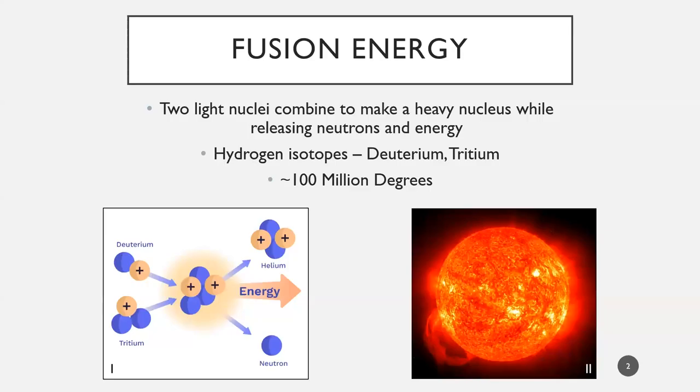But first, what exactly is fusion? Fusion is essentially the combination of two light nuclei. Typically, these are hydrogen isotopes like deuterium and tritium. You smash them together and create a heavier nucleus. During this process, you usually expel a neutron as well as a lot of energy. However, to make fusion happen, the conditions are a bit extreme. We actually need to be at around 100 million degrees, which is actually hotter than the center of the sun.